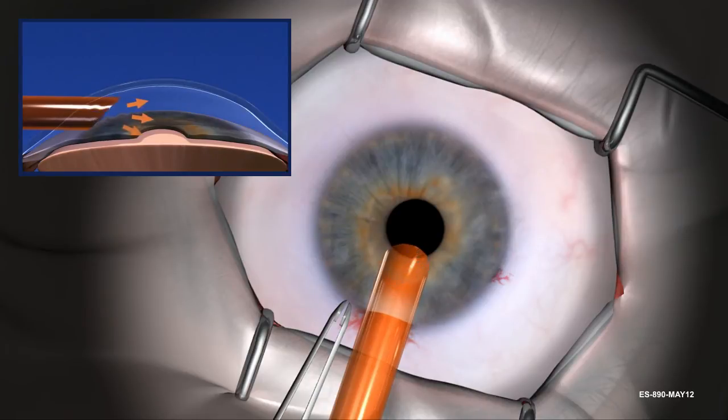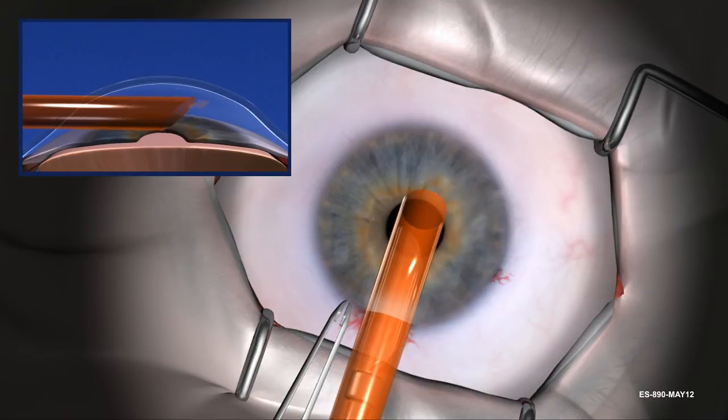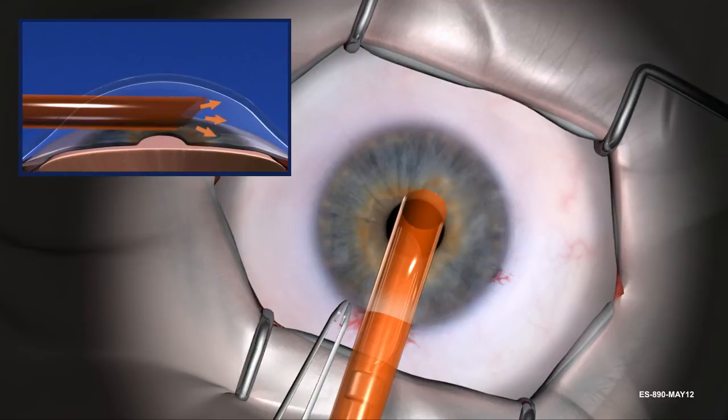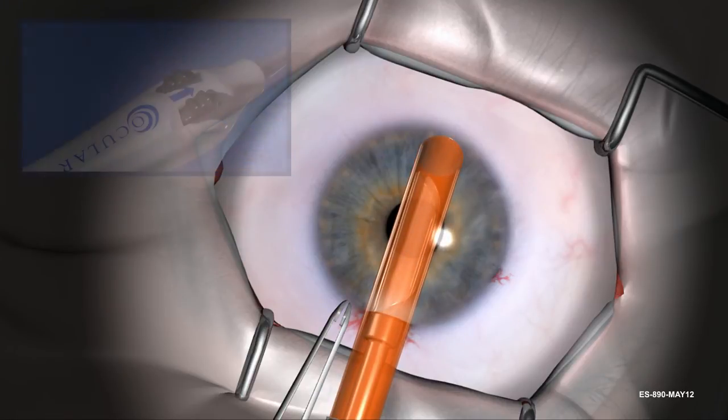Start and continue irrigation with the bottle height at 40 cm. If necessary, deepen the chamber by slowly raising the bottle height while irrigation continues to flow. Continue irrigation as the device is moved across the anterior chamber past the far edge of the stripped stromal bed.